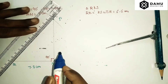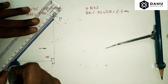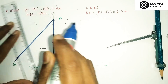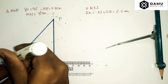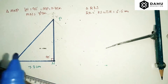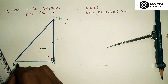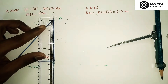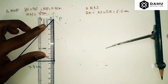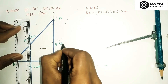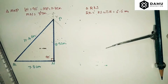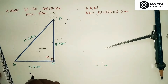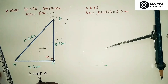Join MP and NP. The measurements are: MP equals 11.4 centimeters, and NP works out to approximately 8.5 centimeters. Triangle MNP is now constructed.